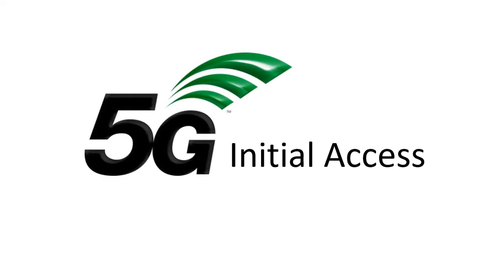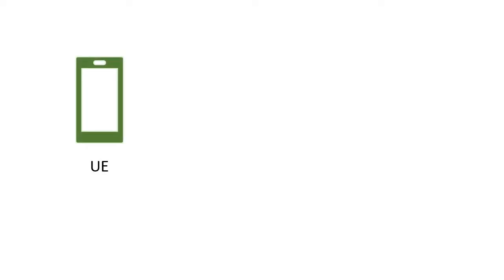In this video we're going to talk about how Initial Access works in 5G. Let's say your mobile phone, the UE or user equipment, is turned on from the power-off state. Based on the SIM settings and user settings, it searches for certain frequencies.